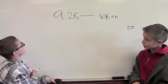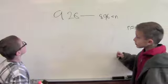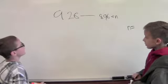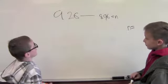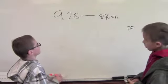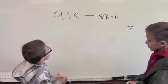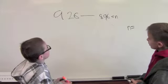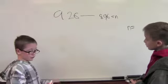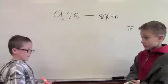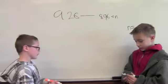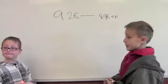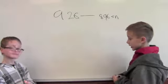We are subtracting 926 and 896 equals a missing variable. The way we'll do it is the picture strategy.